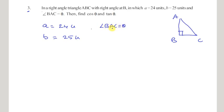They mention that angle BAC is equal to theta. That means at angle A, we consider angle A as theta. Now, find the cos theta and tan theta.